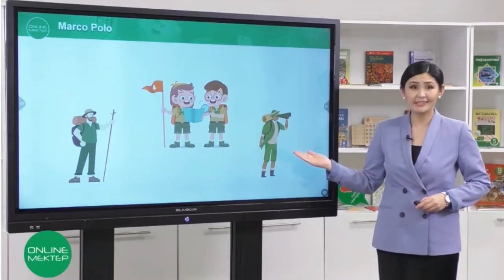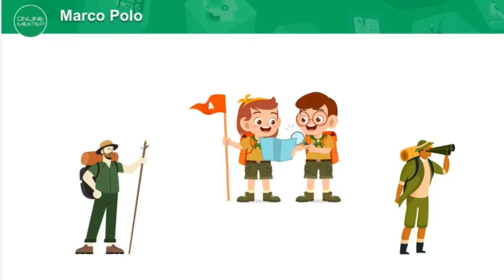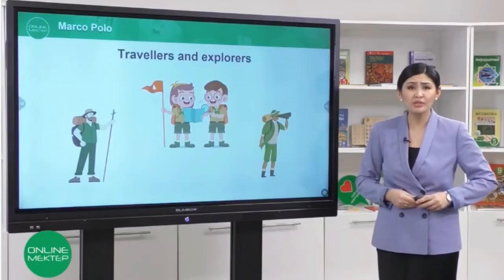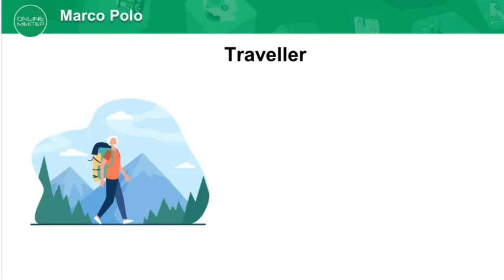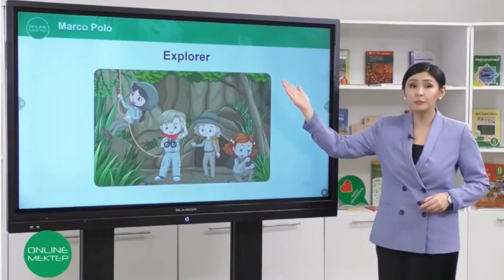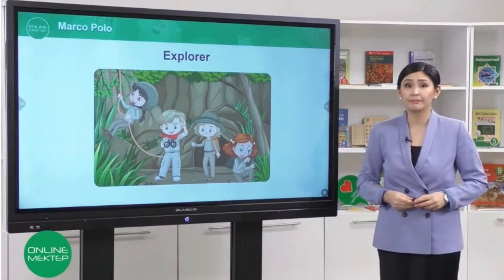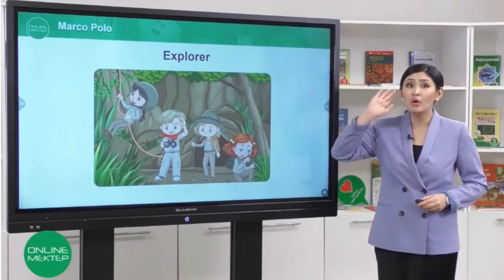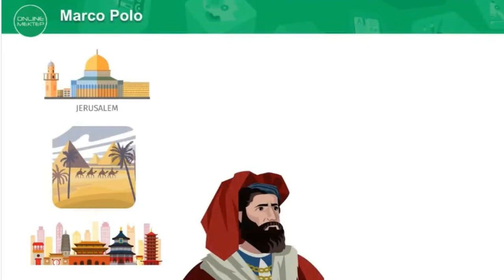Look at the pictures. Can you guess what we are going to talk about? Great job! We are going to talk about travellers and explorers. A traveller is a person who travels to different places and countries. An explorer is a person who travels to new places to learn about them. For example, an explorer can travel to Mars or other places that nobody has visited. Today you will meet a very famous traveller and explorer. Are you ready? Let's go!